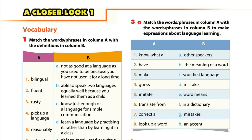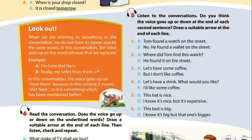Unit 9, Page 34. A closer look 1. Pronunciation. Activity 5: Listen to the conversations. Do you think the voice goes up or down at the end of each second sentence? Draw a suitable arrow at the end of each line.